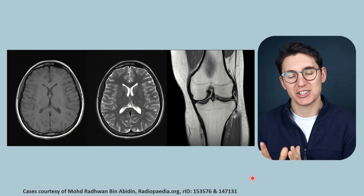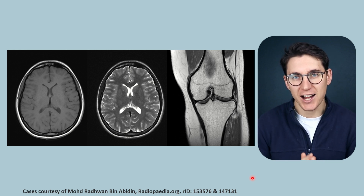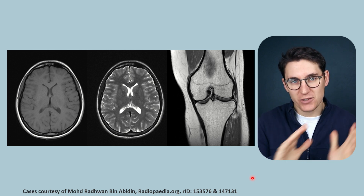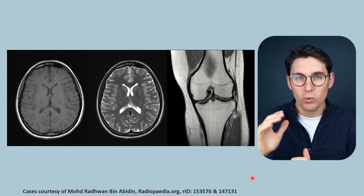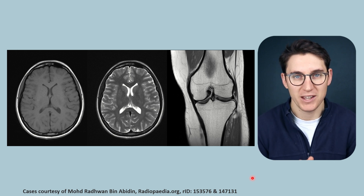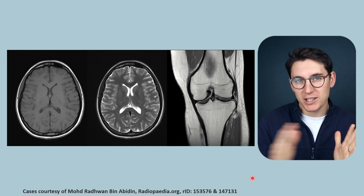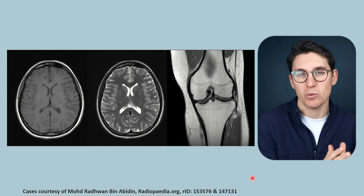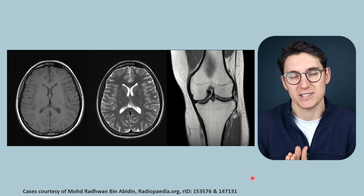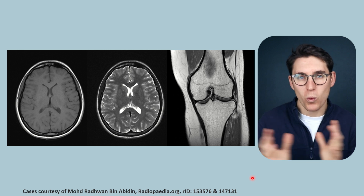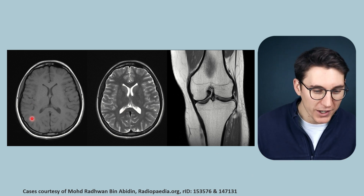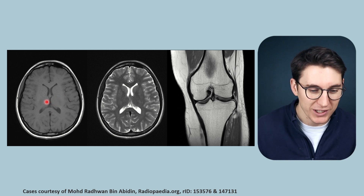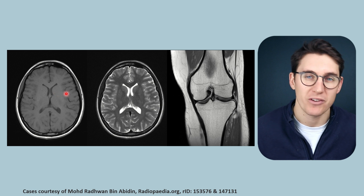We've looked at T2 relaxation and T1 relaxation and how those relaxation rates occur differently within different tissues. Those differing rates account for the T1 or T2 contrast differences within an image. Today we're going to look at how we can manipulate the pulse sequence itself to preferentially highlight either the T1 differences in tissues or the T2 differences in tissues. This is what's known as weighting of an image — we can create a T1 weighted image where the contrast is predominantly due to T1 relaxation differences between tissues.